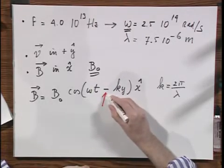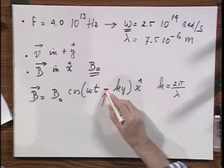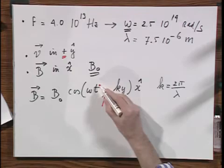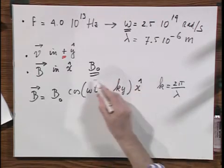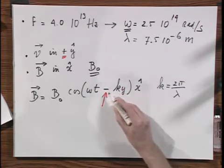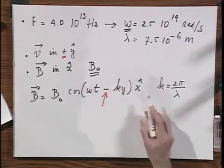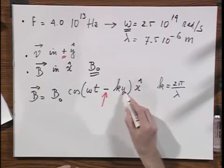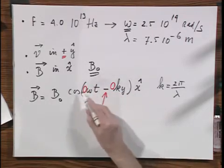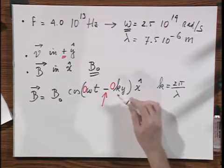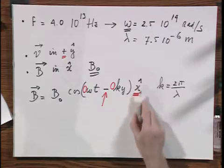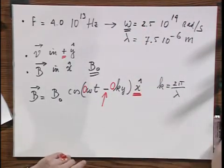This minus sign is absolutely crucial. If this were a plus sign, the wave would not be propagating in the plus Y direction. And you can immediately check that for yourself. Increase T by a teeny-weeny little bit. If you want the cosine function to be exactly the same, you would have to increase Y by a teeny-weeny little bit so that omega T minus K Y remains the same. So, for this wave to propagate in the plus Y direction, it is important that this sign here and this sign here have an opposite sign. If they both have the same sign, minus, minus, or plus, plus, then the wave would run in the minus Y direction. And this X tells you simply that the B vector oscillates in the X direction, sometimes plus, sometimes minus.